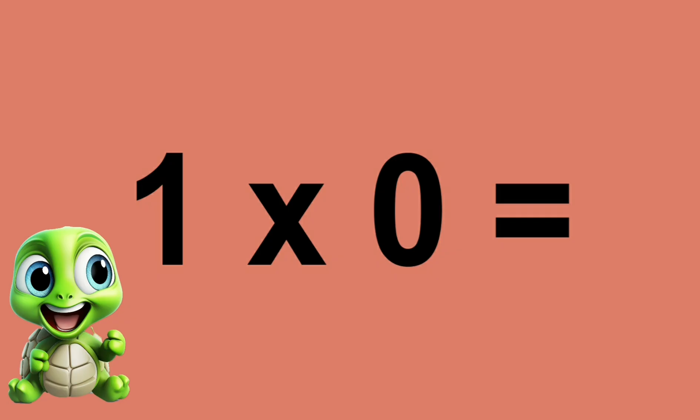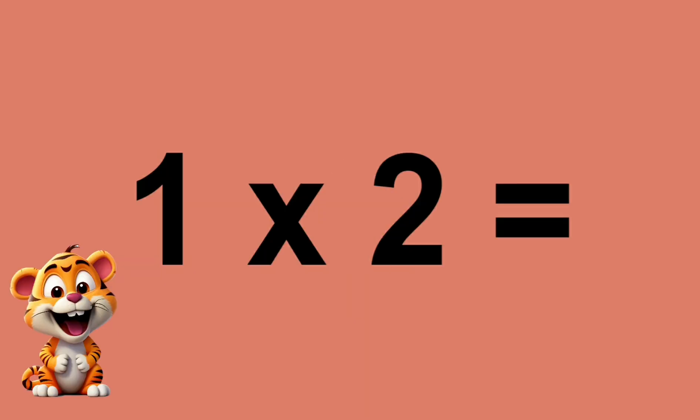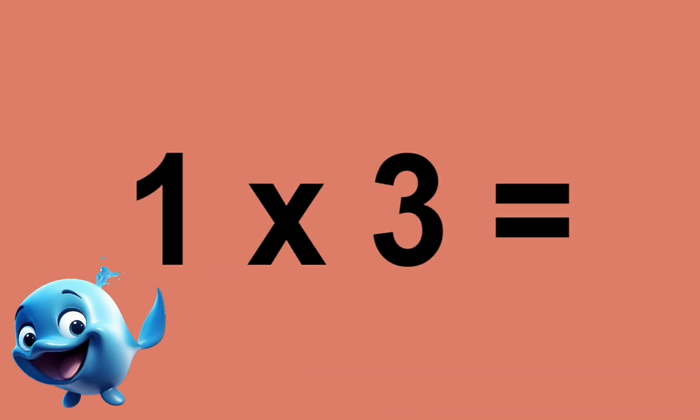1 times 0 equals 0. 1 times 1 equals 1. 1 times 2 equals 2. 1 times 3 equals 3.